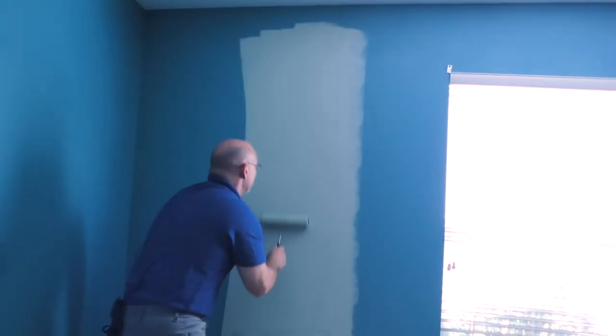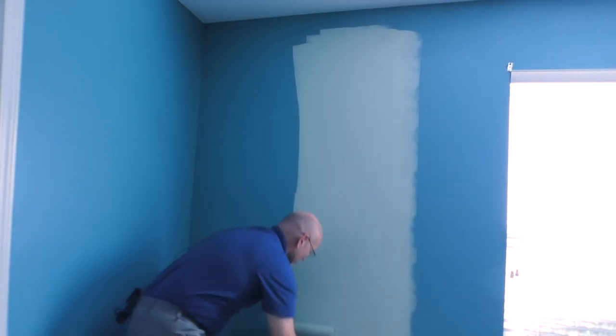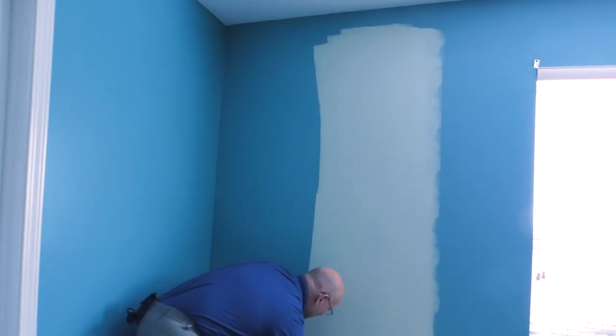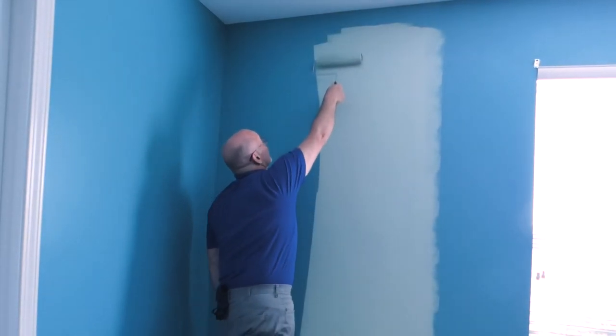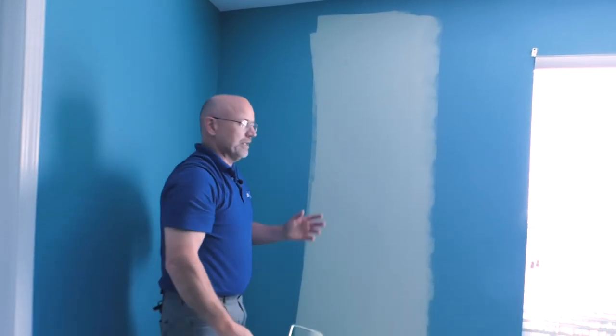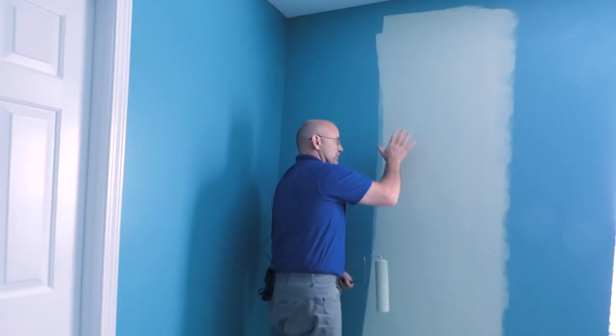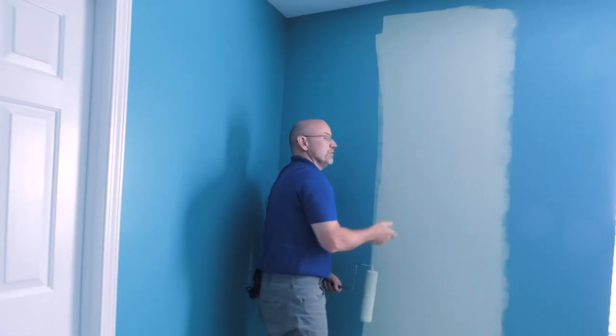Now that I've done the top and bottom, I will go all the way up and all the way down. Keep in mind, normally I have my trim and my ceiling cut in and ready to go, but for demonstration purposes, I'm just going to put paint on this wall and trim that in later. There you go. That way when it dries and you look at this wall, you won't have places where it shows the roller stopped here and started there. It's all one smooth application. It's as simple as that.